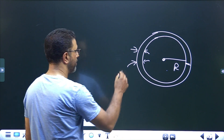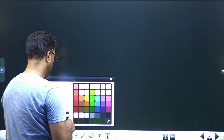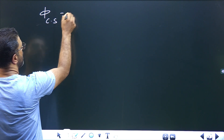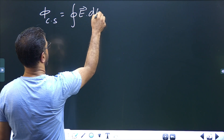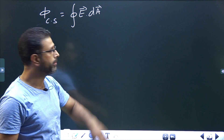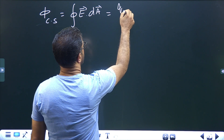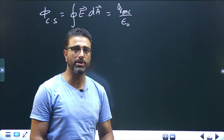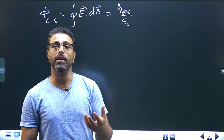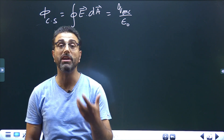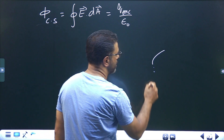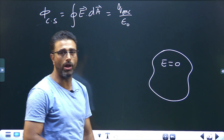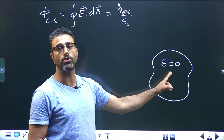First I will talk about the result. From Gauss Law, we know flux through a closed surface, given by the surface integral E dot dA, is equal to Q enclosed divided by epsilon zero. From Gauss Law, we also have a result regarding metals: the electric field inside a metallic body is always zero — inside the material of the metal is always zero, whatever the charge distribution.